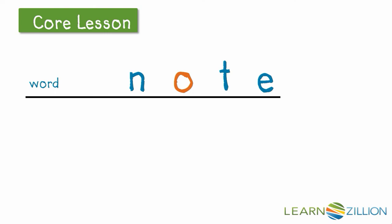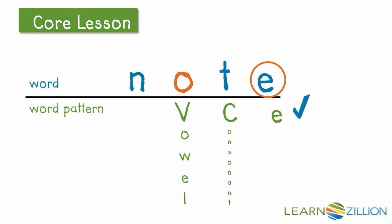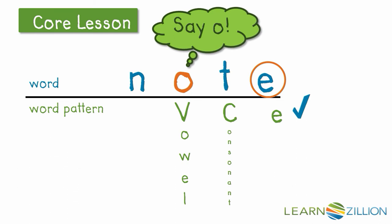I want to see if it follows the vowel consonant e word pattern. I'm going to look at the last three letters of the word. O is a vowel. T is not a vowel — T is a consonant. And then there's an e at the end. This word follows the VCE word pattern: vowel, consonant, e at the end. I know that the vowel o is going to say its name "o" when I read the word because there is a bossy e. Then I have to remember to keep the e silent. Let me try and read the word: n-o-t-e. Note. I kept the e silent.